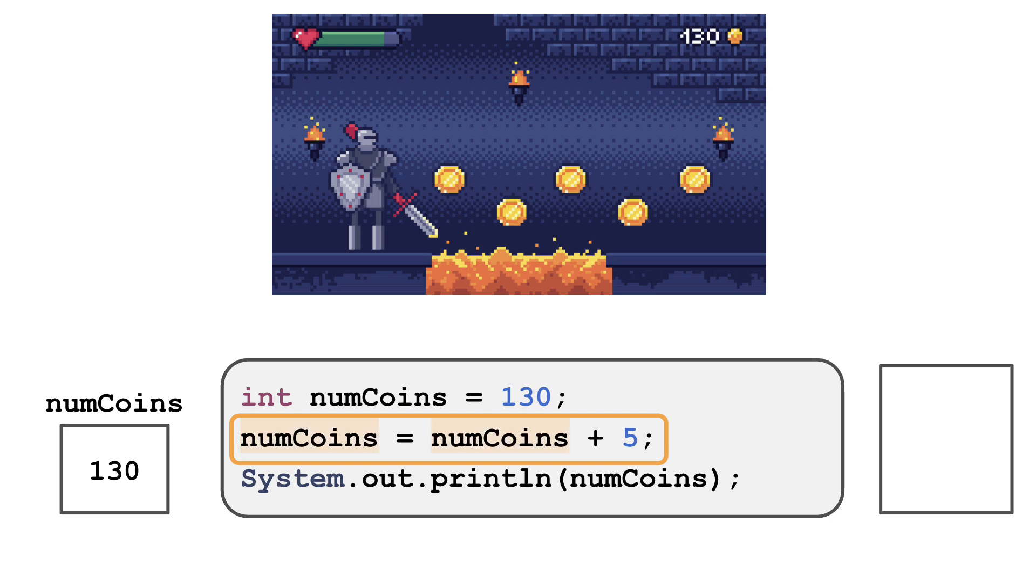Notice how this line of code uses the variable NumCoins twice. This is actually a very common programming practice. Here NumCoins is updating itself based on its own current value.